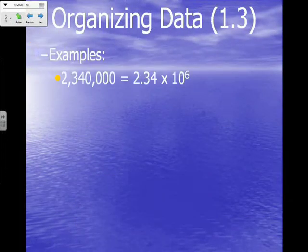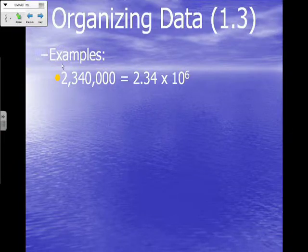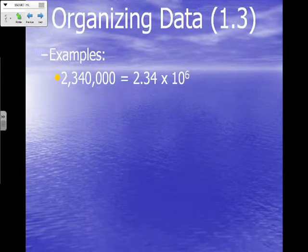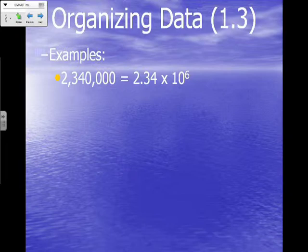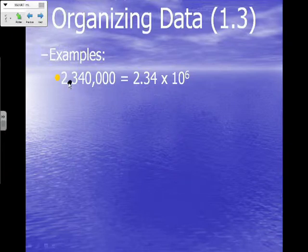Now let's go ahead and work on some examples and practice problems. I've put up the original number here that we're used to seeing, along with the answer already written in scientific notation. Let's go through the steps. The very first step is to place the new decimal — the new decimal is always to the right of the first non-zero number. So let's place our new decimal there.